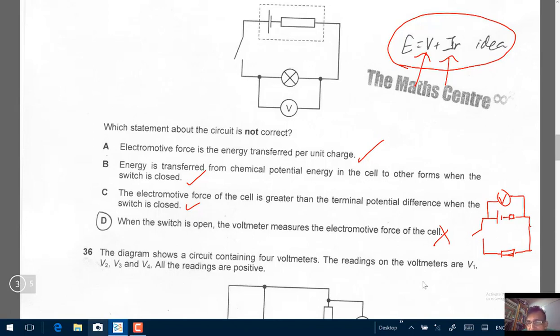With the switch open, and if you want to measure the electromotive force of the cell, this is how you connect your voltmeter. So correct response is D. Let's move on.